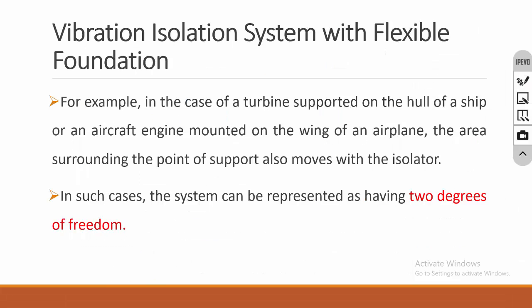The third case is vibration isolation with a flexible foundation, where both systems are flexible. For example, an automobile moving on a road — the tire receives vibration from the bumps on the road, generating vibration transmitted to the vehicle. The tire is floating and the vehicle is also floating, so there is no rigid system. This case is very critical.